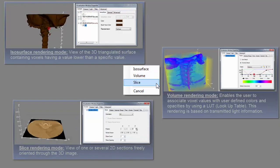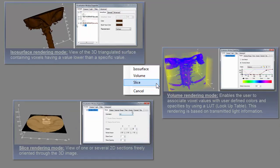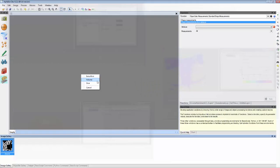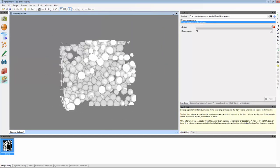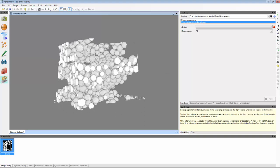or slice rendering to produce one or more 2D sections in a user-chosen orientation. The image can be easily rotated into any orientation in order to view the features of interest.